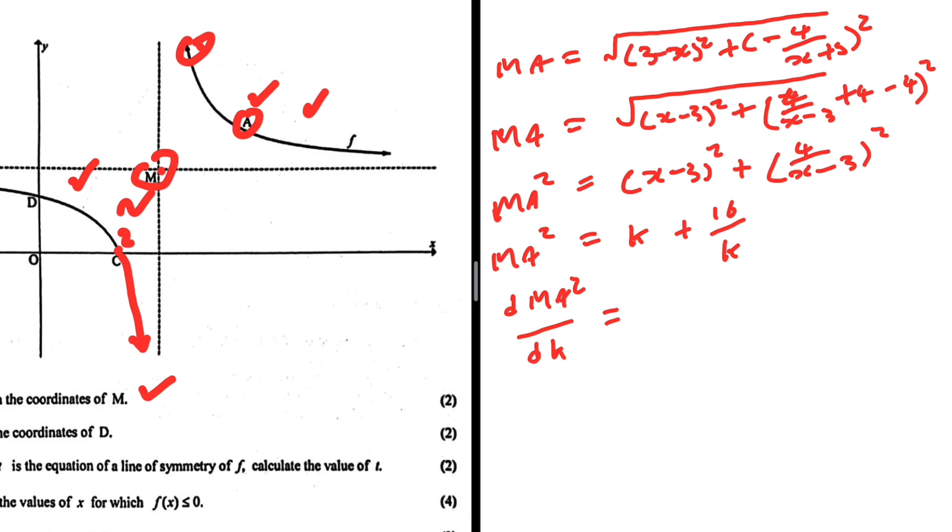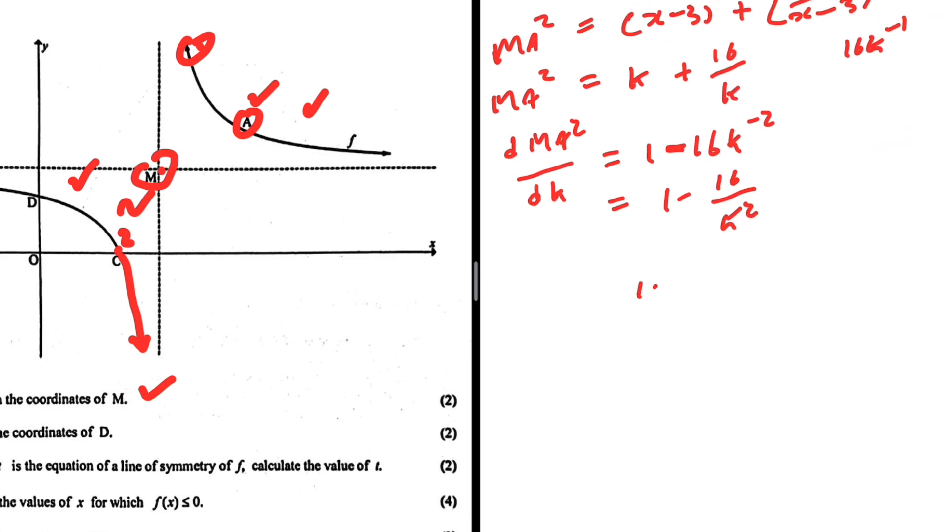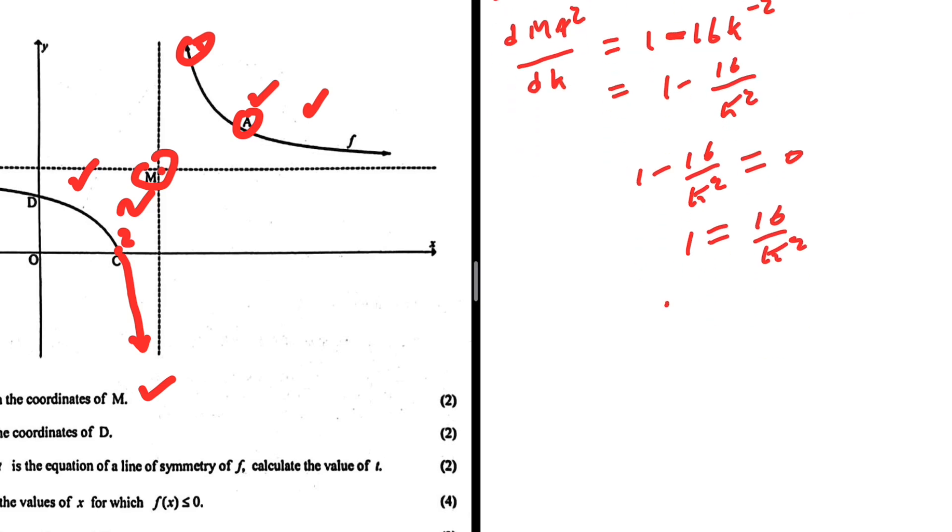And then 16k over k is just 16k to the minus 1. So 1 minus 16k to the minus 2. So this is just 1 minus 16 over k squared. And then we can equate this to 0. When we do that, we're going to get 1 equals 16 over k squared.